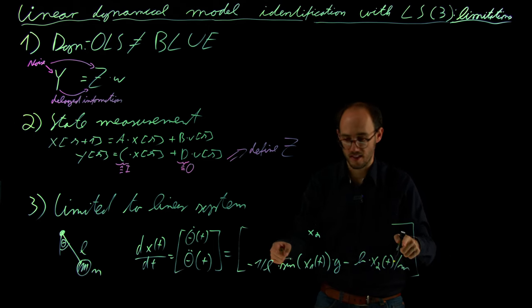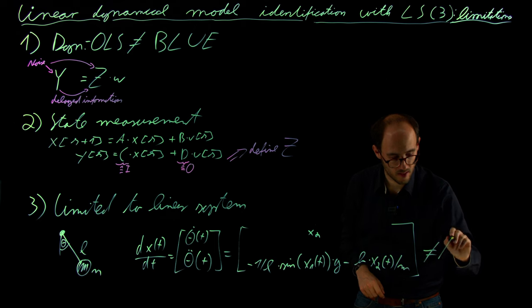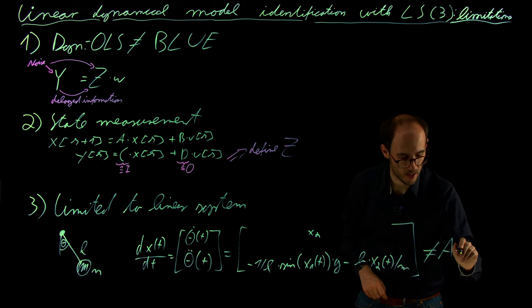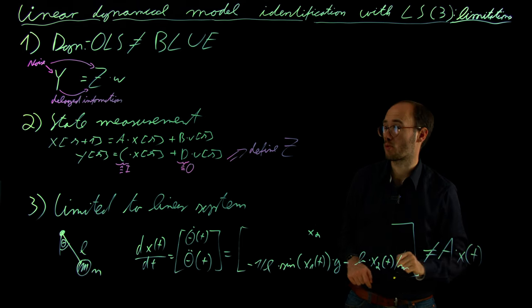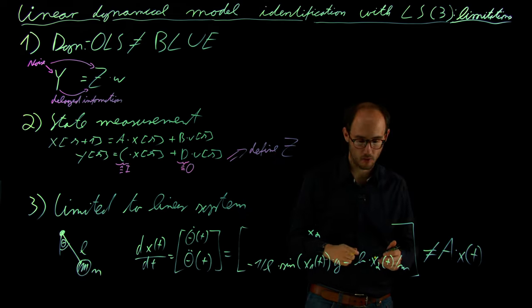And of course, this nonlinear right-hand side is not something which I can represent as A times x(t), which would be required to get into this linear ordinary least squares form.